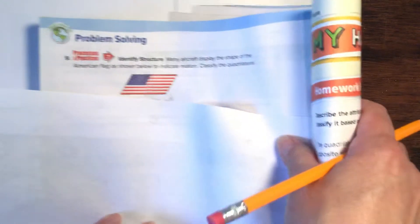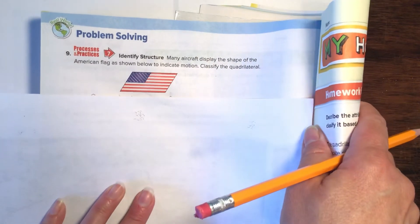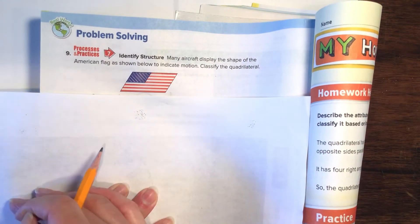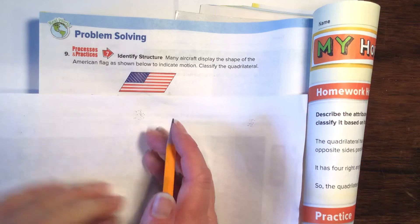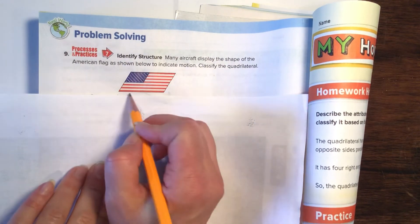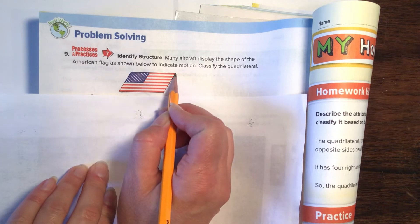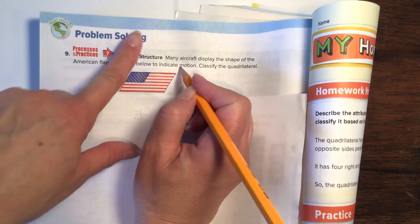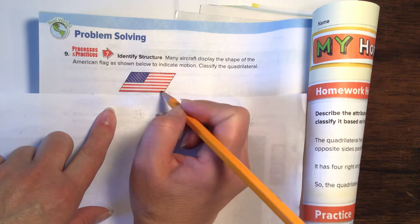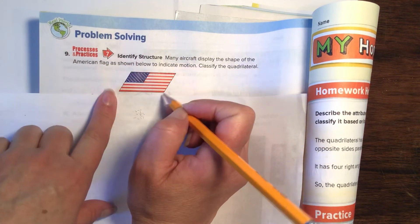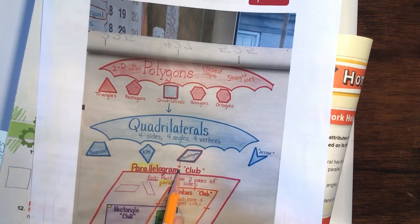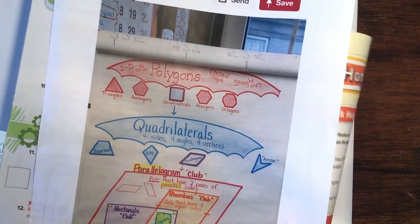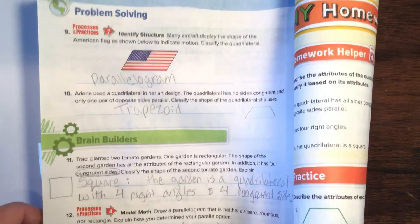Let's dive into number nine. Identify the structure. Many aircraft display the shape of an American flag shown below to indicate motion. Classify the quadrilateral. Let's look at this one — there's one side that's parallel, and look at this side, they're parallel too. So it has two pairs of parallel sides. With our handy-dandy worksheet, the Parallelogram Club must have two pairs of parallel sides. So that cute little shape is a parallelogram.